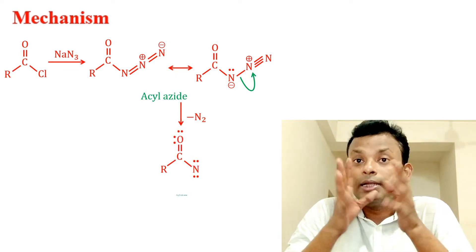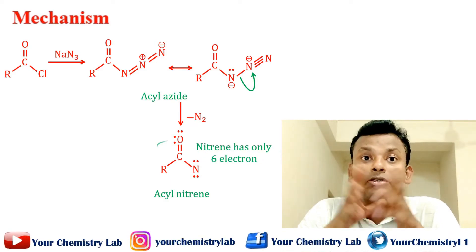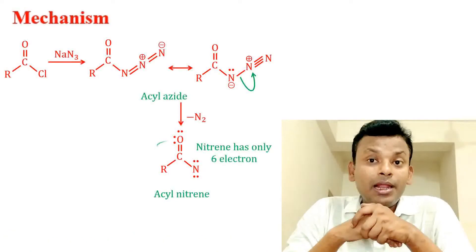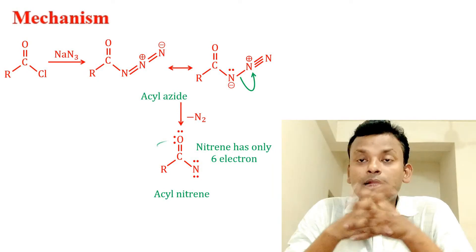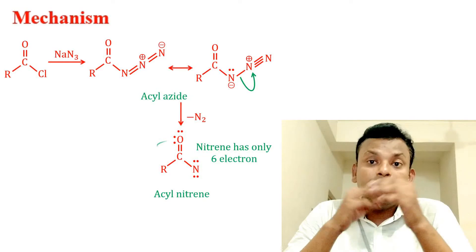The nitrene has two bonds, nitrogen fewer than a normal amine, and has two lone pairs, making six electrons in all. Nitrenes, like carbenes, are immensely reactive and electrophilic.